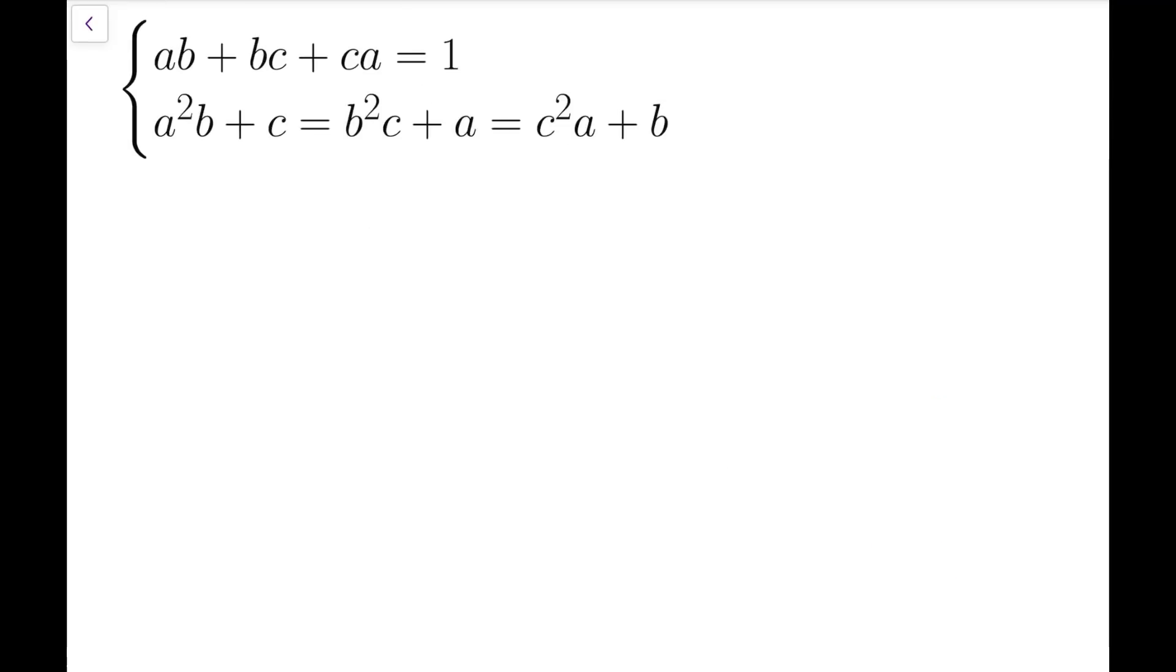The first thing I will do is randomly pick two parts inside the second equation and see what we can get. So from a²b + c equals b²c + a, we have a²b - a equals b²c - c. We can take some common factor. Now a times (ab - 1) equals c times (b² - 1).